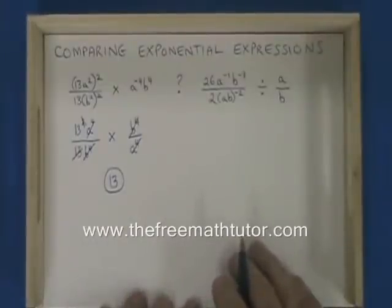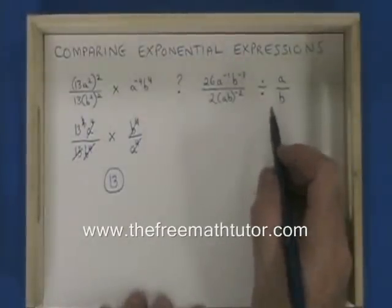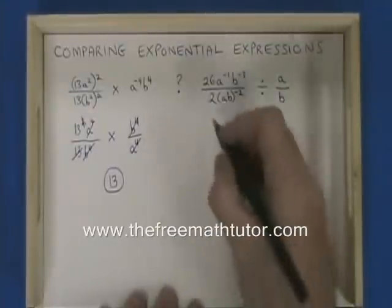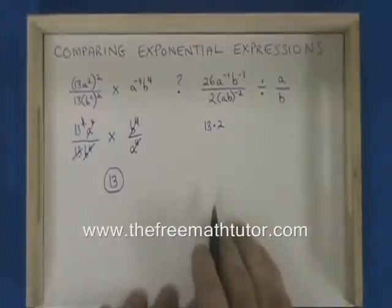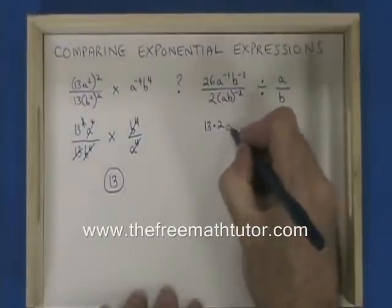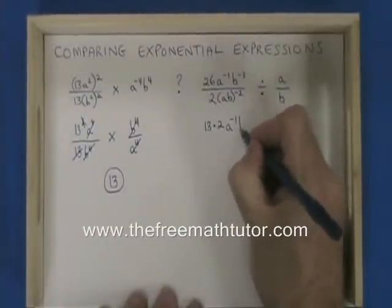On the right side, I'm going to convert 26 into 13 times 2. I'll keep a to the negative 1, b to the negative 3.